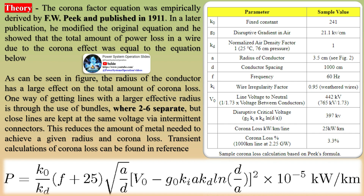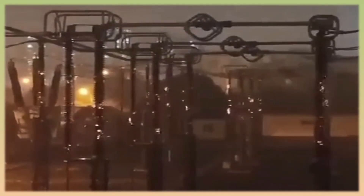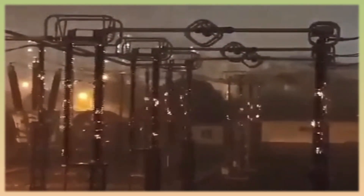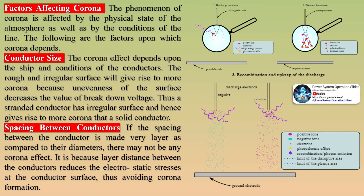Corona discharge power losses are also highly dependent on weather and temperature. The corona factor equation was empirically derived by F.W. Peek and published in 1911. In a later publication, he modified the original equation and showed that the total amount of power loss in a wire due to the corona effect was equal to the equation. The radius of the conductor has a large effect on the total amount of corona loss. One way of achieving lines with a larger effective radius is through the use of bundles, where two to six separate but close lines are kept at the same voltage via intermittent connectors, reducing the metal needed to achieve a given radius and corona loss.